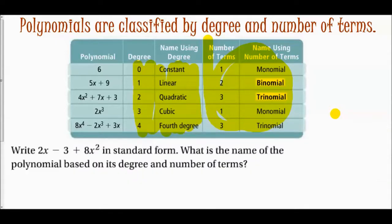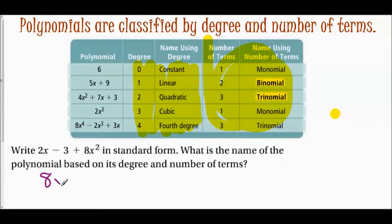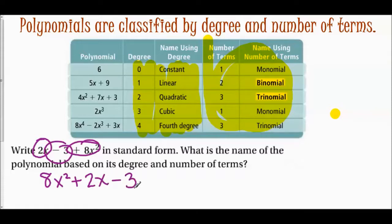Let's practice. To write two x minus three plus eight x squared in standard form: the like terms are already combined, so we just arrange by degree. Eight x squared is the highest degree, then two x, then negative three. Written in standard form: eight x squared plus two x minus three. It's second degree — a quadratic — and it has three terms, so it is a quadratic trinomial.